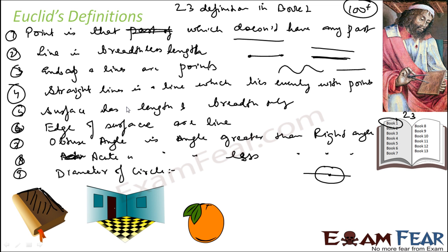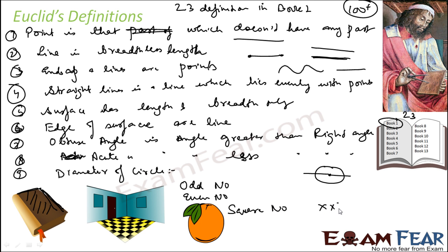He defined odd number: an odd number is one which can't be divided into two equal parts. He defined even number: an even number is something which is divisible into two equal parts. He defined square number: a square number is something which is equally multiplied by an equal — that is, x times x, or x squared.